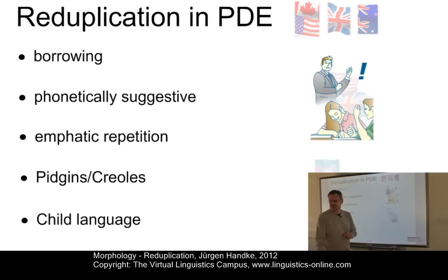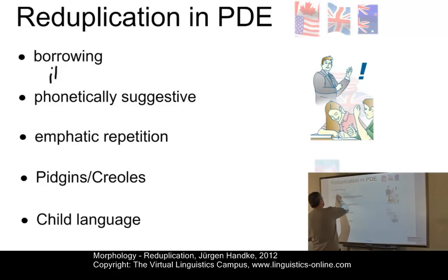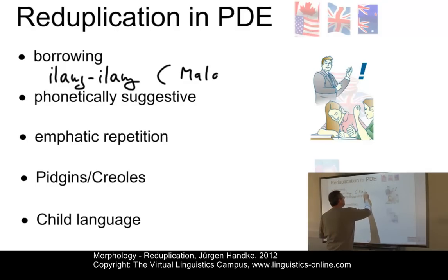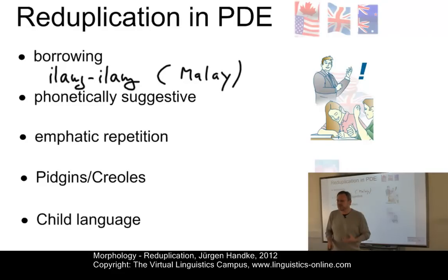Here are the contexts. One context concerns borrowing — examples of borrowing from other languages. We have a word in English, 'ylang', which is simply a type of tree coming from the Malay language into English, a language spoken in Southeast Asia. A second example would be words that are phonetically suggestive, in many cases examples of onomatopoeia.